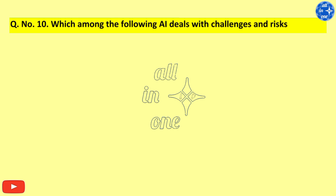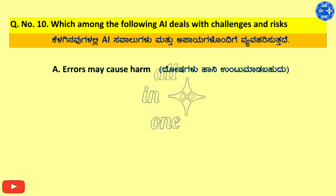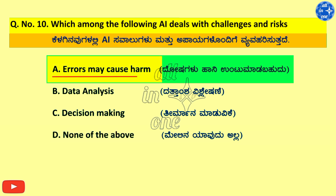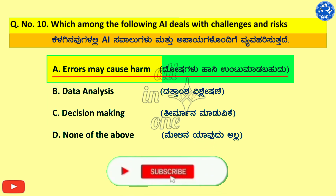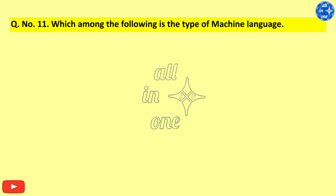Question number 10. Which among the following AI deals with challenges and risks? Question number 11. Which among the following is the type of machine learning?